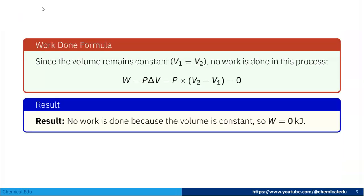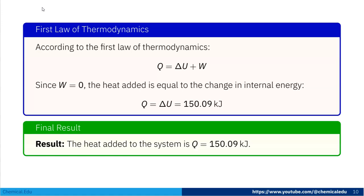Since the volume remains constant, V1 equals V2, so no work is done and W equals zero. From the first law of thermodynamics, Q equals delta U plus W. Since W is zero, Q equals delta U equals 150.09 kJ. So the heat added to the system Q equals 150.09 kJ.